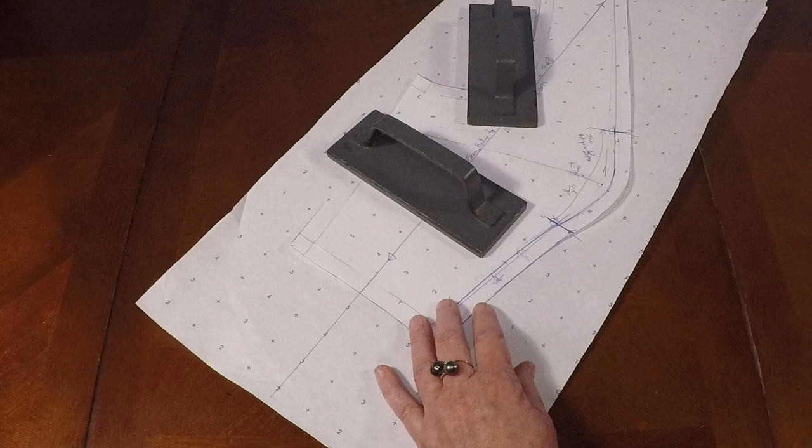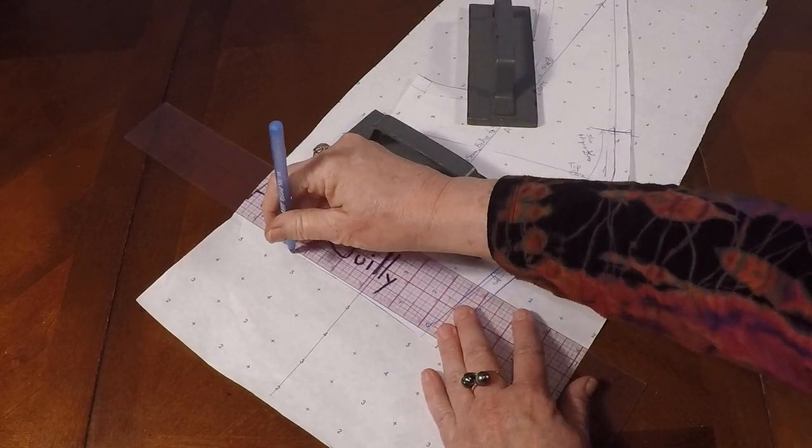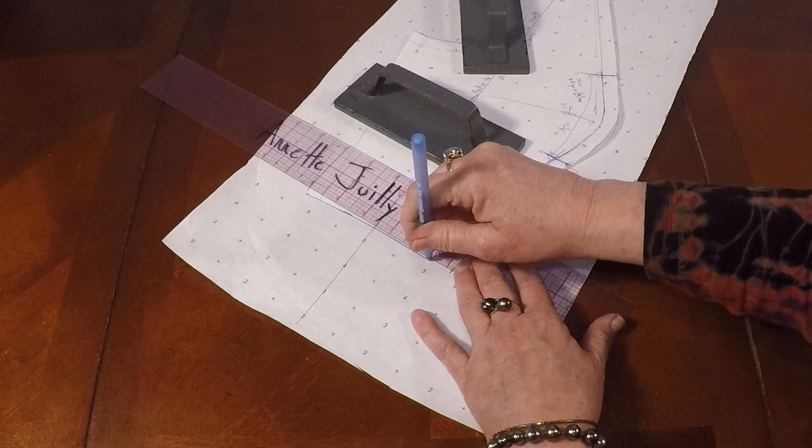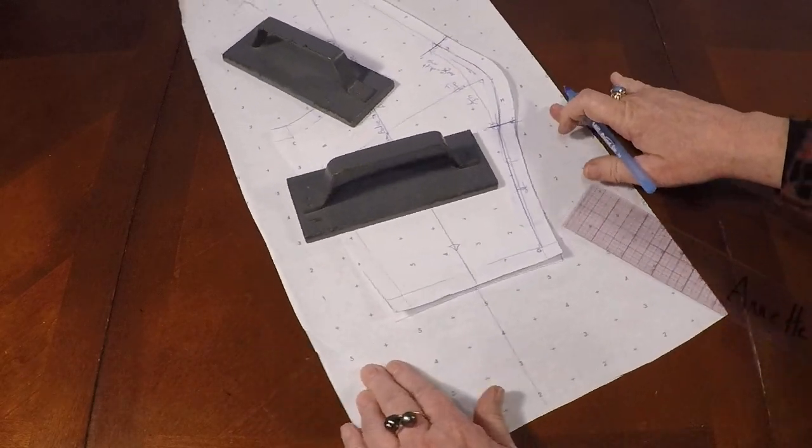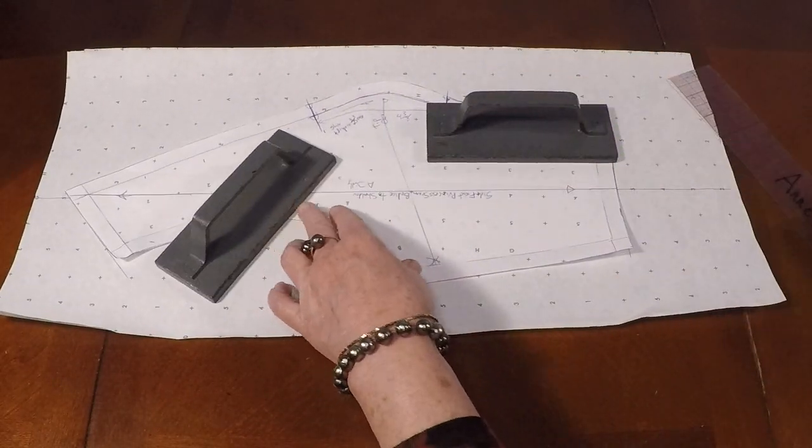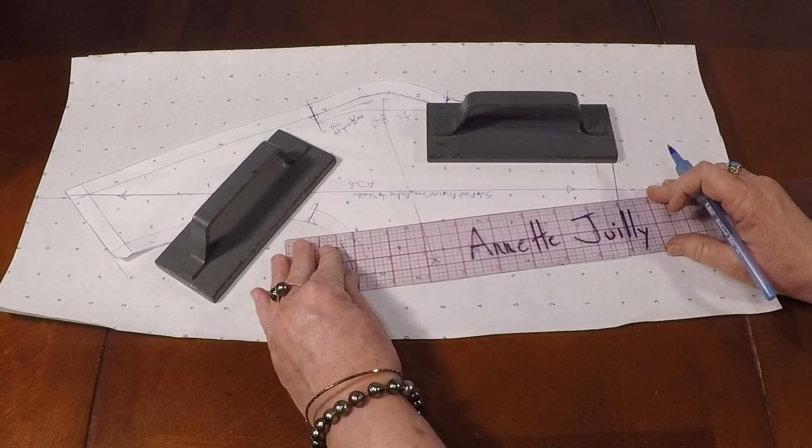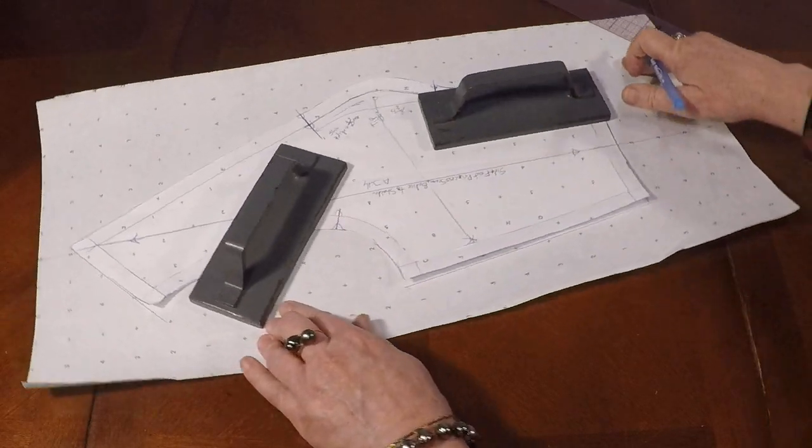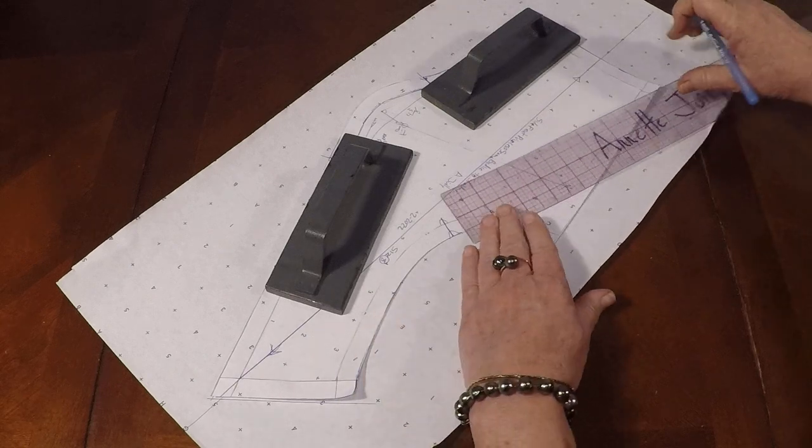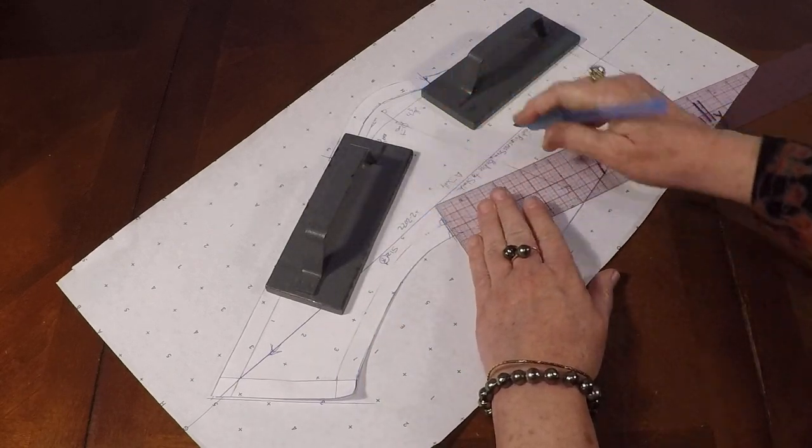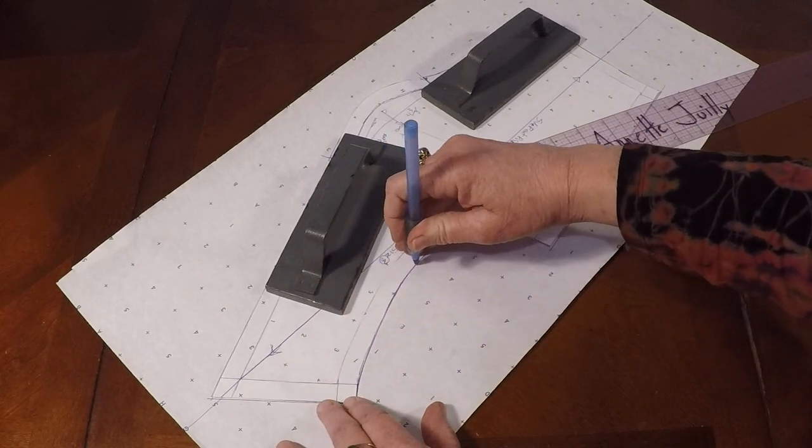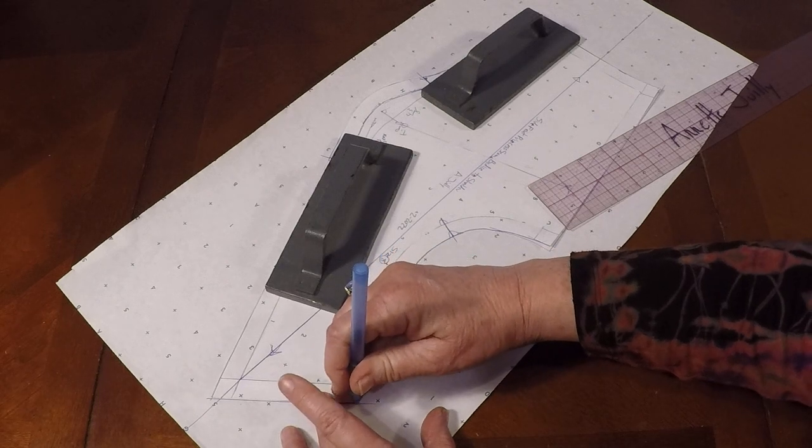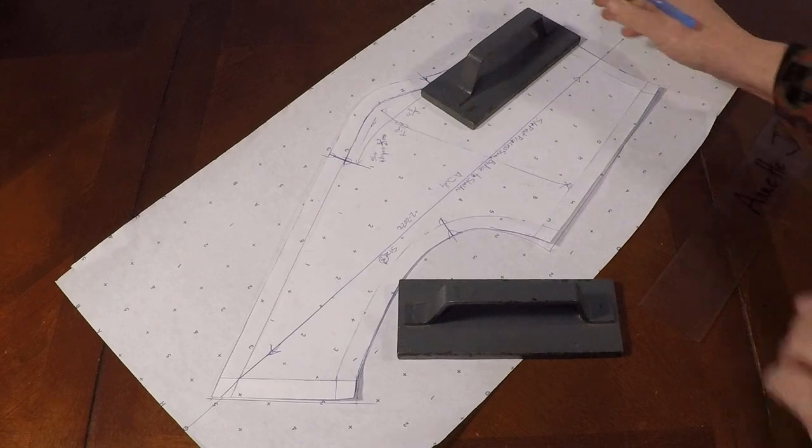Now we're going to go ahead and trace off the waist and we'll get to our side seam. And this pattern piece I'm working with, it has seam allowance already in it. So when we trace it off, we need to make sure that we mark that on the pattern and denote that we have seam allowance, so that you don't go back and add it again. Let's go ahead and trace off our armhole. And it looks like we have everything traced off. Let's go ahead and lift that pattern up.